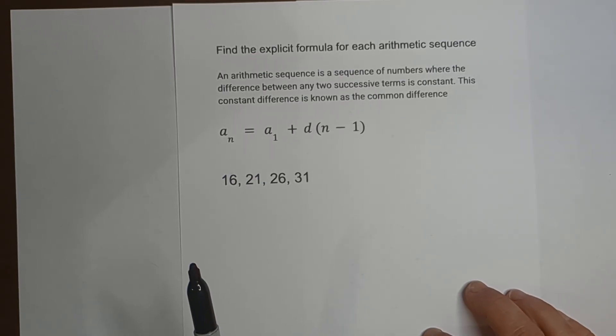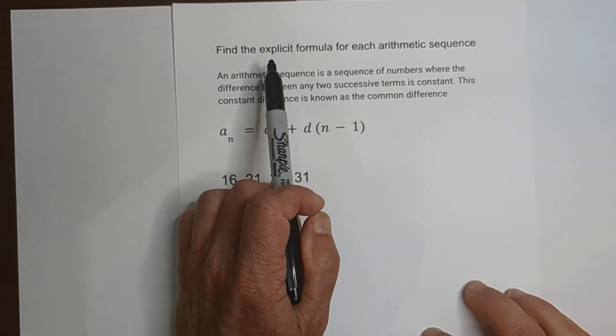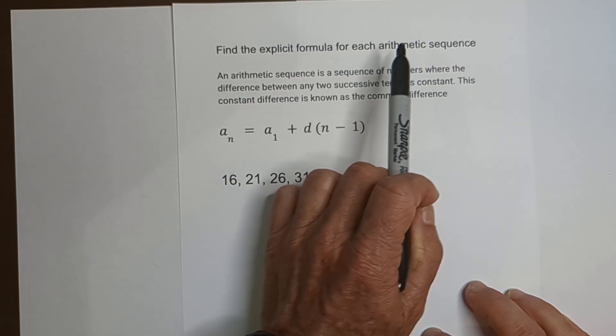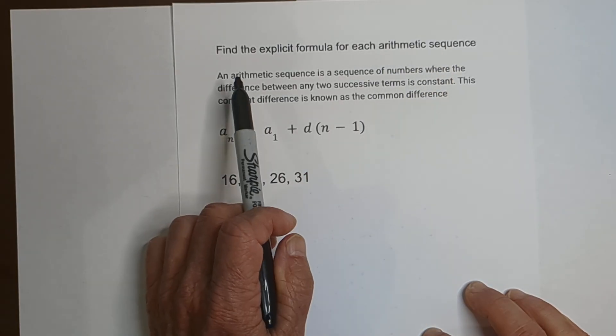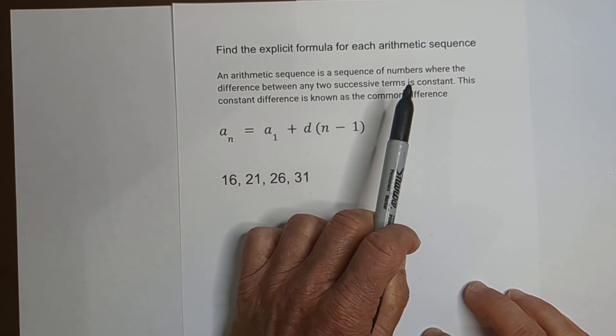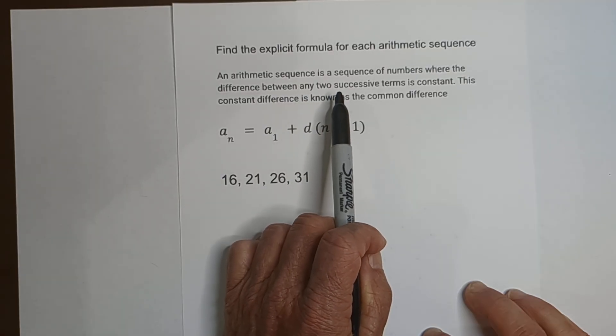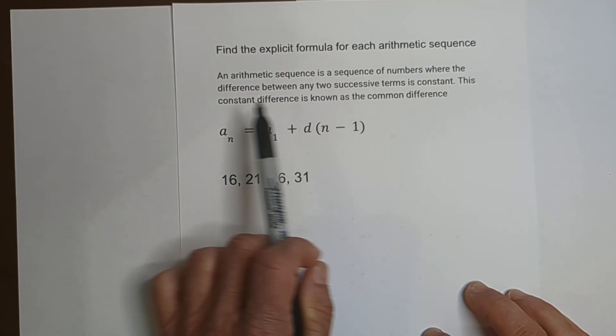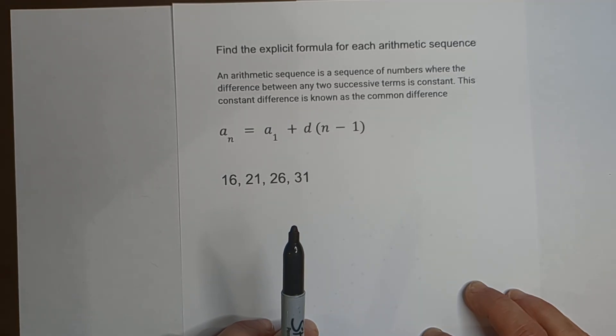Welcome to MooMoo Math and Science. In this video, let's go over how to use an explicit formula for an arithmetic sequence. An arithmetic sequence is a sequence of numbers where the difference between any two successive terms is constant. This constant is known as the common difference.